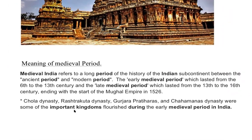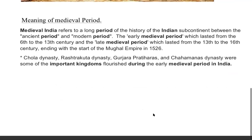As the Mughal Empire declined, new kingdoms started coming up. The Chola dynasty, Rashtrakuta dynasty, Gurjara Pratihara, and Chahamana were some of the important kingdoms that came up during the medieval period in India.